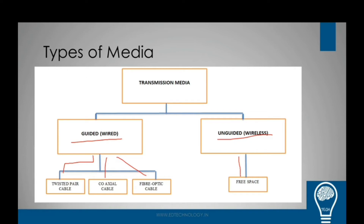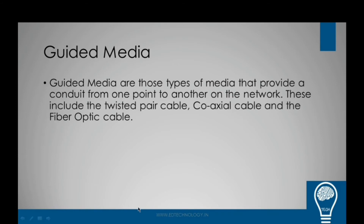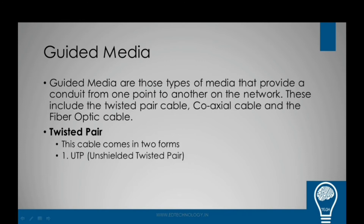Guided media are those types of media that provide a physical medium used to send signals. In that form we use twisted pair — UTP cable — coaxial cable, fiber optic, etc. The first part is twisted pair. In twisted pair we have UTP, which is Unshielded Twisted Pair, and also STP, which is Shielded Twisted Pair.